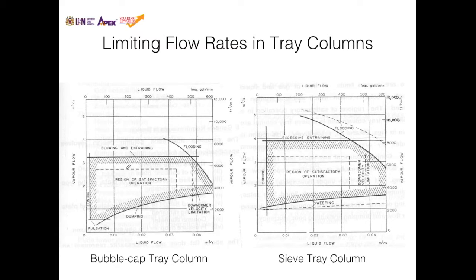The shaded region within these boundaries is the region of satisfactory operation of the absorption column. It gives us an idea of the effects of liquid flow and vapor flow on the conditions within the tray column.